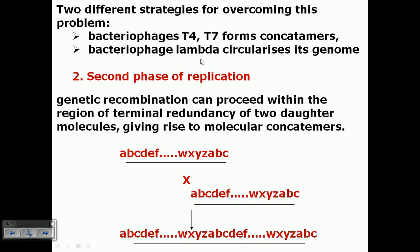In the case of bacteriophage T4 and T7, this problem is resolved by the formation of concatimers and, similarly, by the formation of terminally redundant sequences. Terminal redundancy means that at both ends we have the same type of genes — for example, genes 1, 2, 3, 4, 5, 6 ... and then after gene 16, we have 1, 2, 3 again. This same gene repetition at both terminal ends helps prevent gene loss.